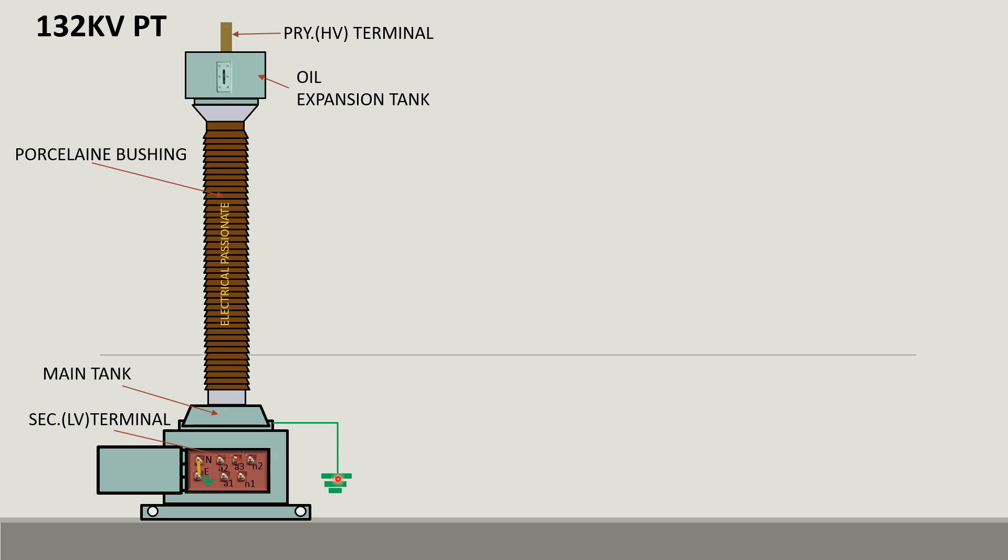The primary terminal along with expansion tank is to connect with high voltage, that is 132 by root 3KV voltage source. The porcelain bushing in hollow shape is fixed with both the tanks and provides insulation between the high voltage and earth.